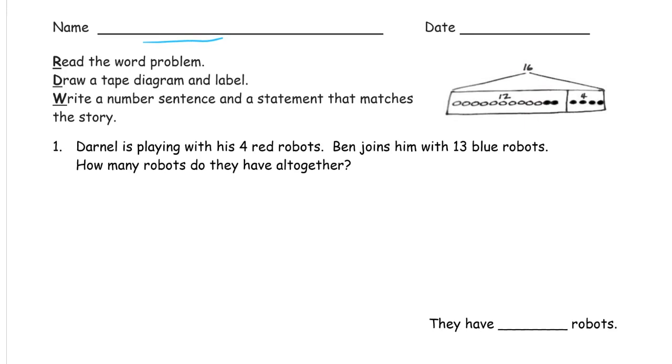The method we use for solving all word problems is first we read the problem, then we draw some kind of picture, usually it doesn't always have to be a tape diagram, but for this homework assignment it does. We'll draw some kind of a math picture or a tape diagram and label it, and then we're going to write a number sentence and a statement that matches the story. Now the statements for first grade, a lot of them they're already written, we just have to fill in the blank. But we do need that number sentence too, so we have to have the tape diagram and the labels. The labels are going to be these numbers, or sometimes letters to show what parts go with what parts of the story.